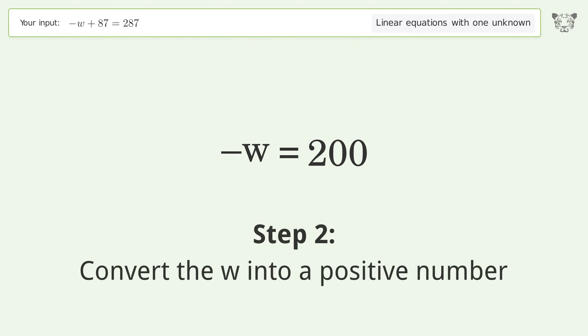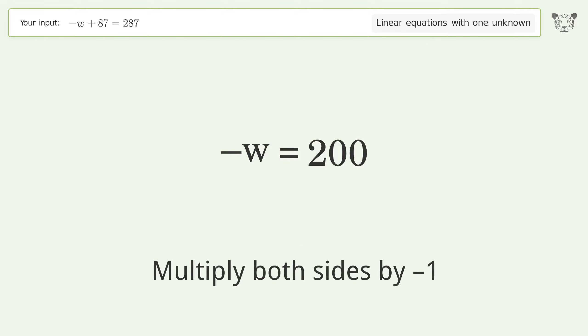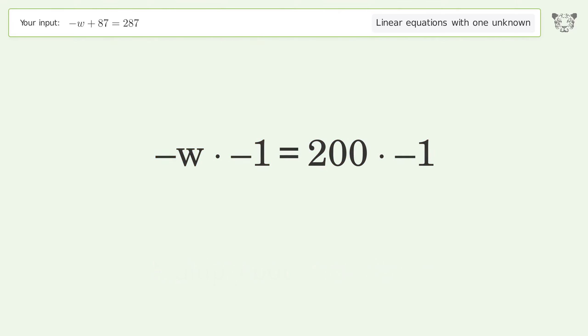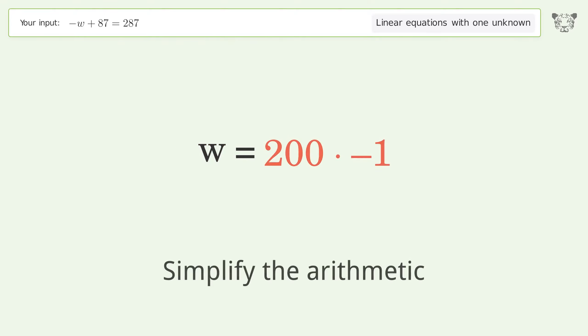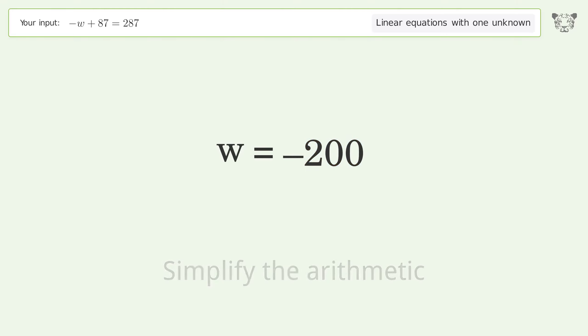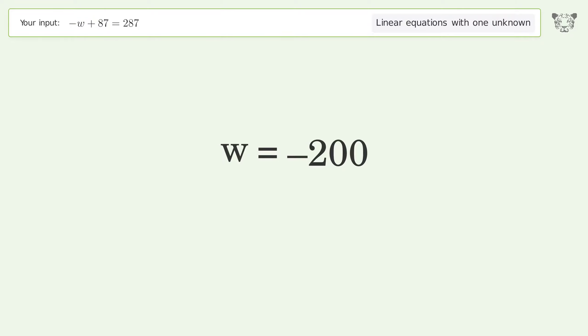Convert w into a positive number by multiplying both sides by negative 1. Remove the ones, simplify the arithmetic, and so the final result is w equals negative 200.